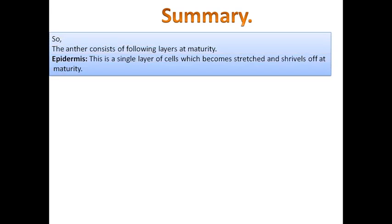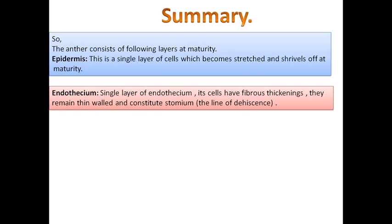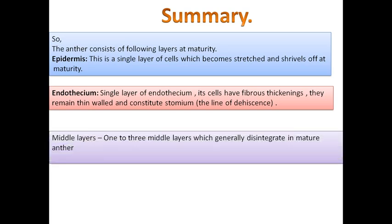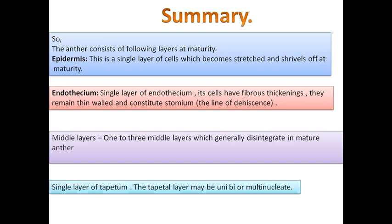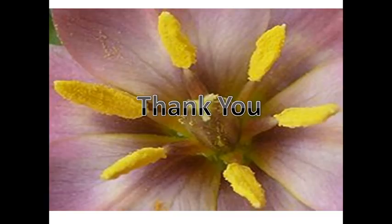In summary, the anther wall at maturity consists of the following layers: the epidermis, a single layer of cells that become stretched and shrivel at maturity; the endothecium, a single layer with fibrous thickenings and thin walls that forms the stomium — the line of dehiscence; the middle layers, one to three in number, which generally disintegrate at maturity; and finally the single tapetum layer, which can be multinucleate or binucleate and gives nutrition to the developing microspores.